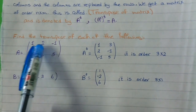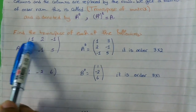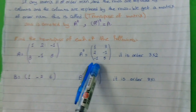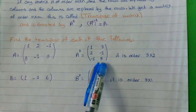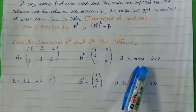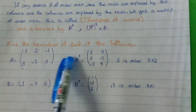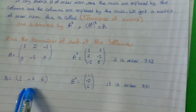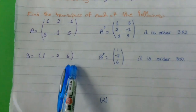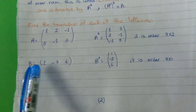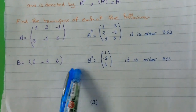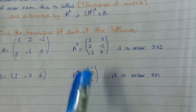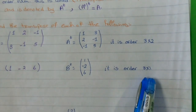Find the transpose of each of the following. For matrix A = [1, 2, negative 1; 3, negative 1, 5]: the first row 1, 2, negative 1 becomes a column, and the second row also becomes a column. The order of this matrix is 3 by 2. For matrix B, which is a row matrix, its transpose will be a column matrix with order 3 by 1.